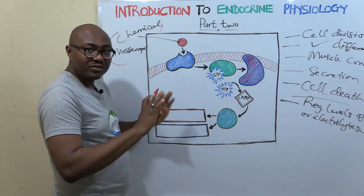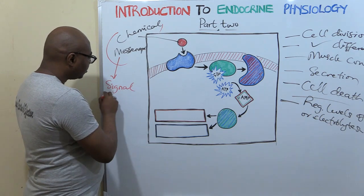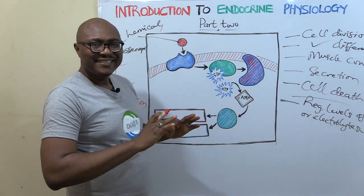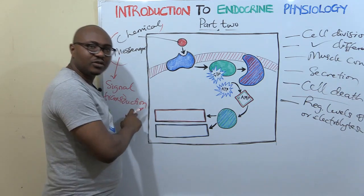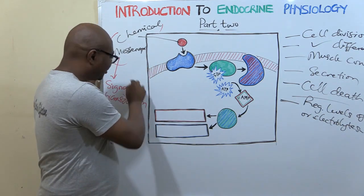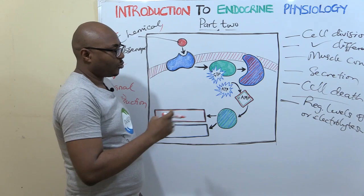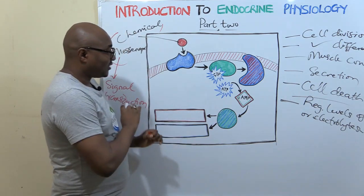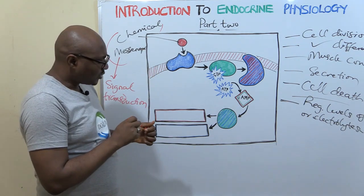The mechanism of action is usually referred to as signal transduction. The word transduction is talking about the conversion of a signal to a physiological response. Generally, transduction means the conversion of one energy to another. But in physiology, when we say transduction, we are referring to the conversion of a signal or stimulus into a physiological response. Signal transduction and mechanism of action mean the same thing in this respect.